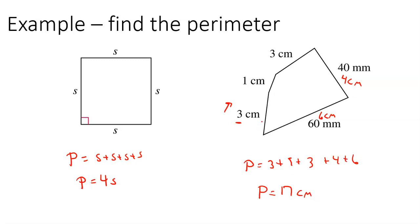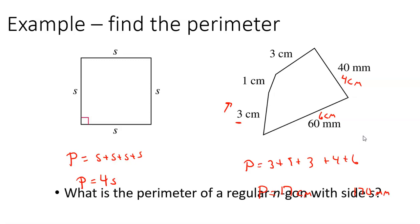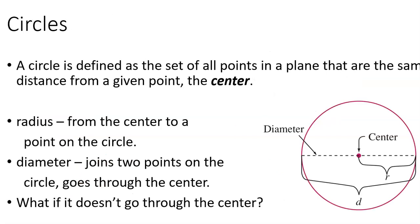If you had changed these centimeters to millimeters, you could have also answered 170 millimeters — that's why units are important. If you just write 170, I could guess you meant millimeters, but I'm not sure. What's the perimeter of a regular N-gon with a side of S? It would just be the number of sides times the side length. So if you have a regular pentagon, you take each side and multiply by five, because they're all the same when it's regular.